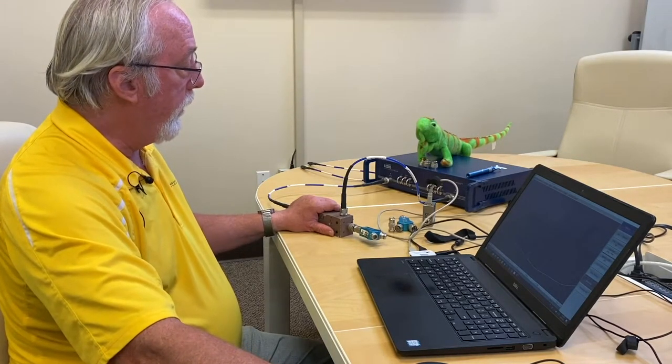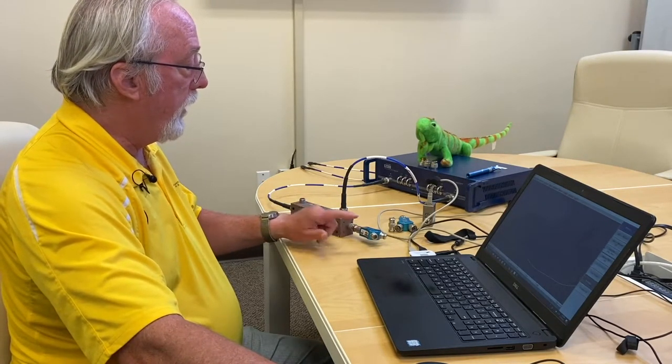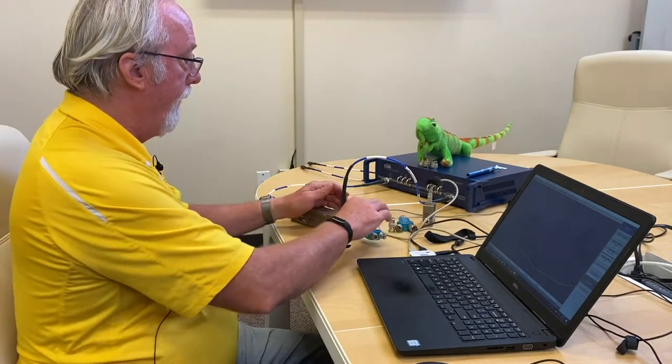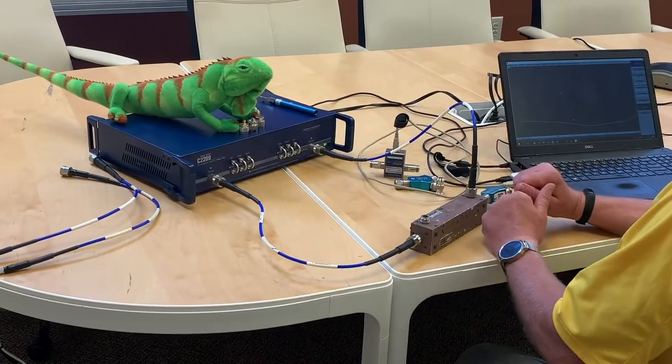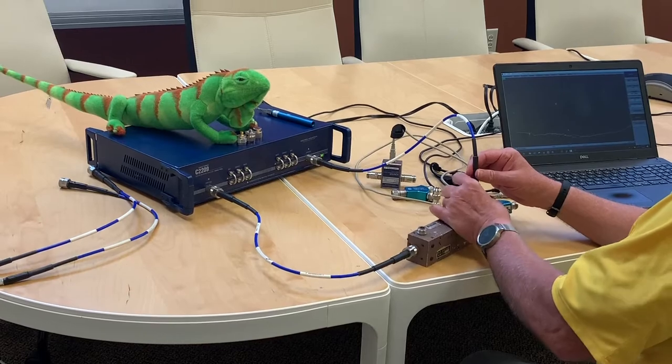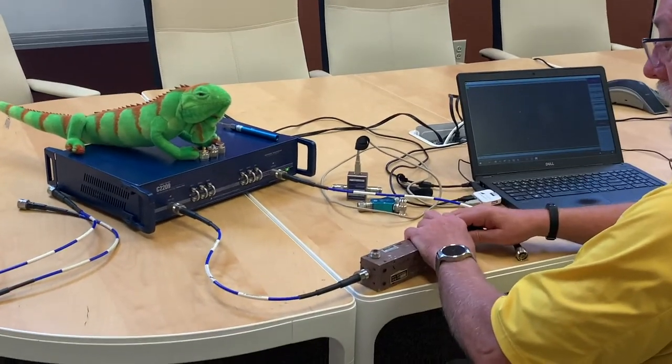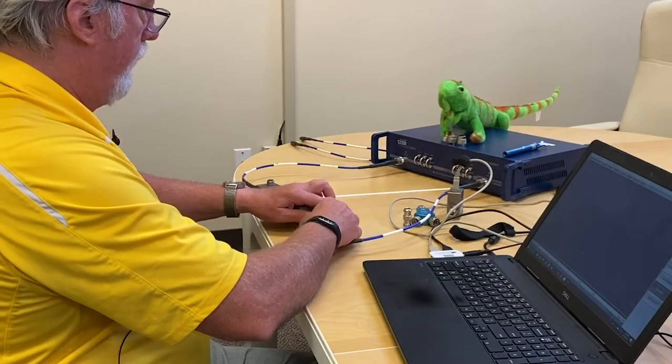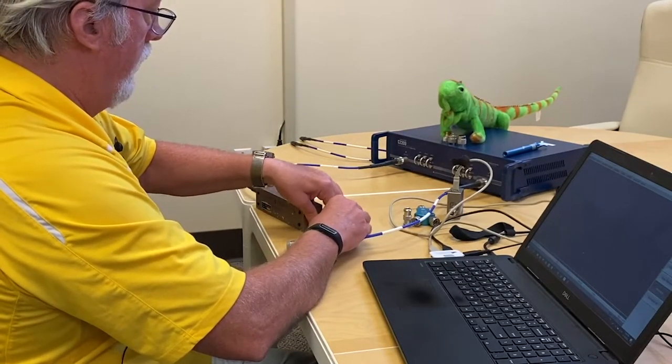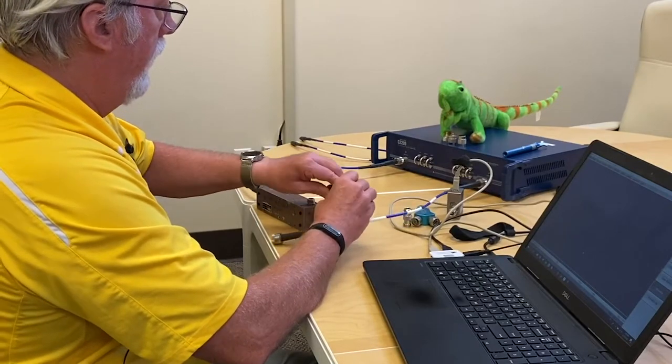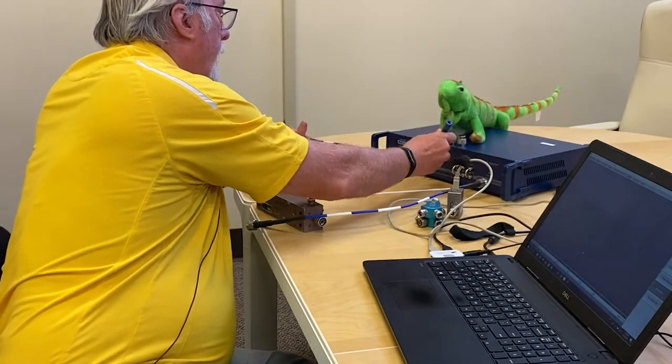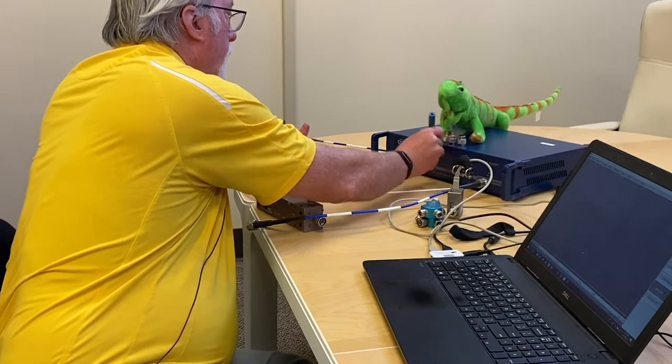It can only be as good, though, as the load that you apply here. Because if there's a reflection from this load, it will certainly appear here. Alright, so we know quite a bit about this directional coupler. Let's use it. I'm going to remove the loops so I can get directly to the receivers.